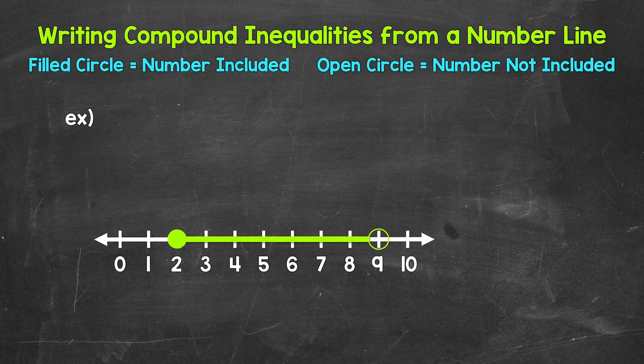Now, the first thing that we need to determine when writing a compound inequality from a number line is if it's an OR or AND compound inequality. Well, we have what looks like a line segment or just a section of a number line here. We don't have any arrows or inequalities that necessarily pop out. This is what AND compound inequalities look like on a number line.